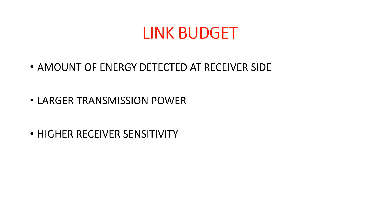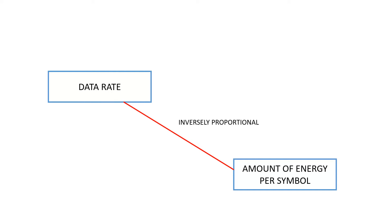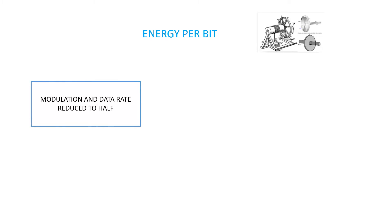We will cover some basic concepts related to LPWAN: link budgets, data rates, and receiver sensitivities. Link budget is the measure of the amount of energy that is detected at the receiver side. Larger transmission power at transmitter side or higher sensitivity at receiver side can result in better link budget. Data rate and amount of energy per symbol are inversely proportional. Energy per bit is the main lever to change the possibility of a message being heard. To achieve this in LPWAN, the modulation rate and data rate are reduced to half, which results in putting twice as much energy into each symbol, thus increasing the overall link budget.